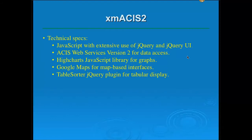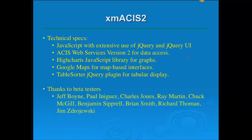For those on the technical side who would like to know what's running under the hood: XMASIS II is written in JavaScript and makes extensive use of the jQuery and jQuery UI libraries. It uses ASIS Web Services Version 2 for data access, and for the display of graphs it uses the Highcharts JavaScript library. We have some map interfaces built into XMASIS II that use Google Maps, and we use a jQuery plug-in called Table Sorter for tabular display. I'd also like to thank the beta testers — their suggestions drove a lot of the enhancements made during development.